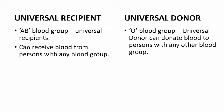Persons with AB blood group are known as universal recipients because they can receive blood from persons with any blood group. Persons with O blood group are called universal donors because they can donate blood to persons with any other blood group.